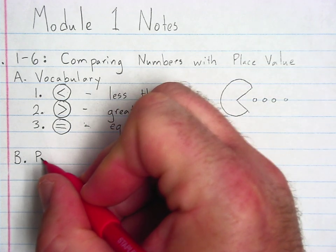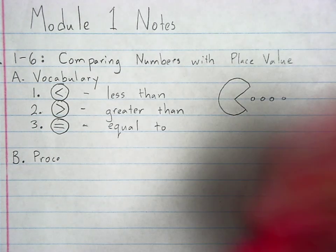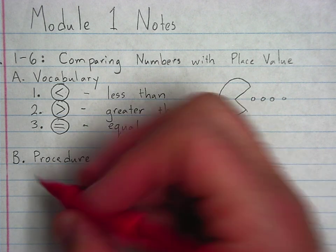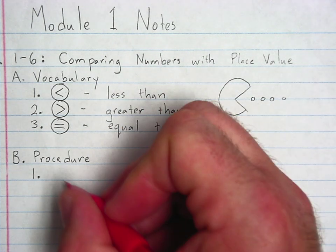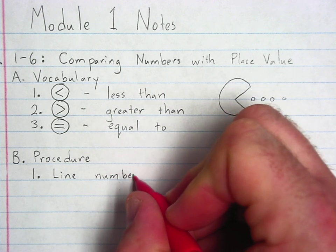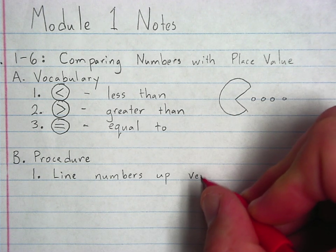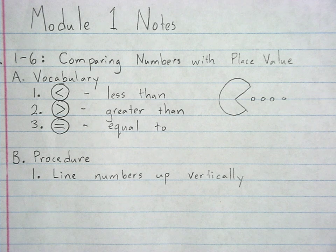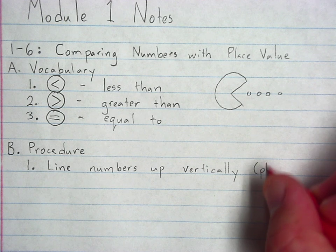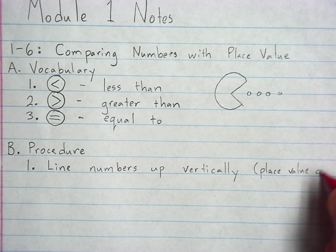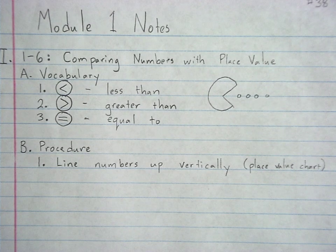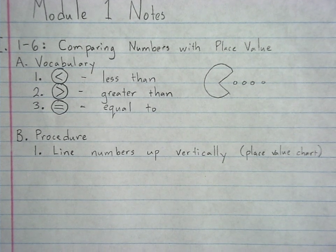All right. Part B. The procedure that we're going to use to compare numbers. It's not too complicated. It's pretty straightforward. Step one. You are going to line your numbers up. Line the numbers up vertically. Think of it like a place value chart. In fact, if you have one handy, you may want to use a place value chart. Of course, you can always draw one on your paper as well. Line your numbers up vertically on a place value chart.